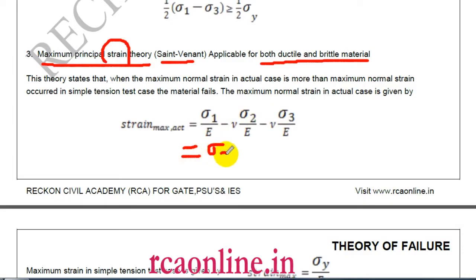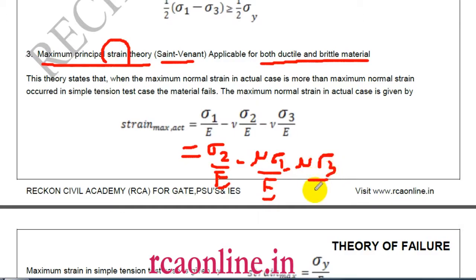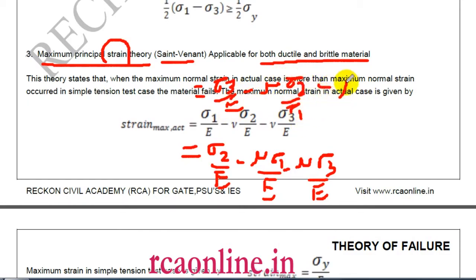There are two other principal strain values: sigma two/E minus mu(sigma one/E) minus mu(sigma three/E), and sigma three/E minus mu(sigma two/E) minus mu(sigma one/E). The basic assumption is that sigma one, sigma two, and sigma three are of the same nature. If they are of different nature, the signs change accordingly.